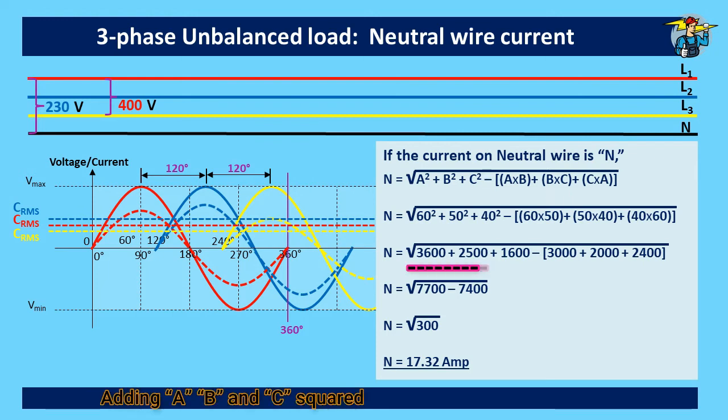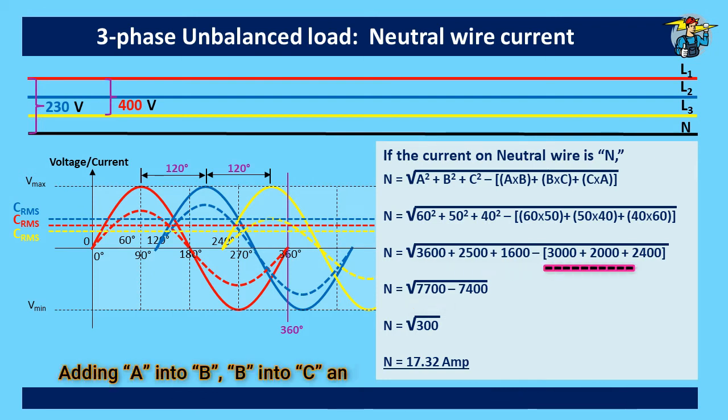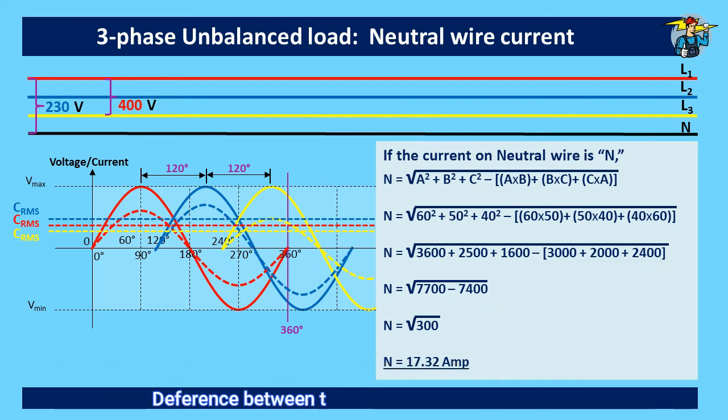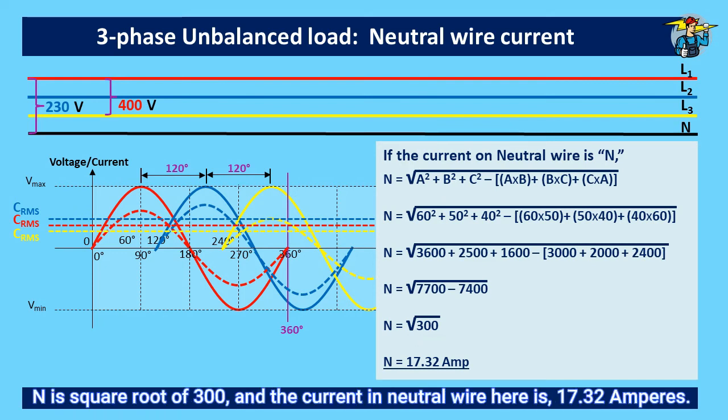Adding A, B and C squared values together makes 7,700. Adding A into B, B into C and C into A multiplications together becomes 7,400. Difference between those is 300. N is square root of 300, and the current in neutral wire here is 17.32 amperes.